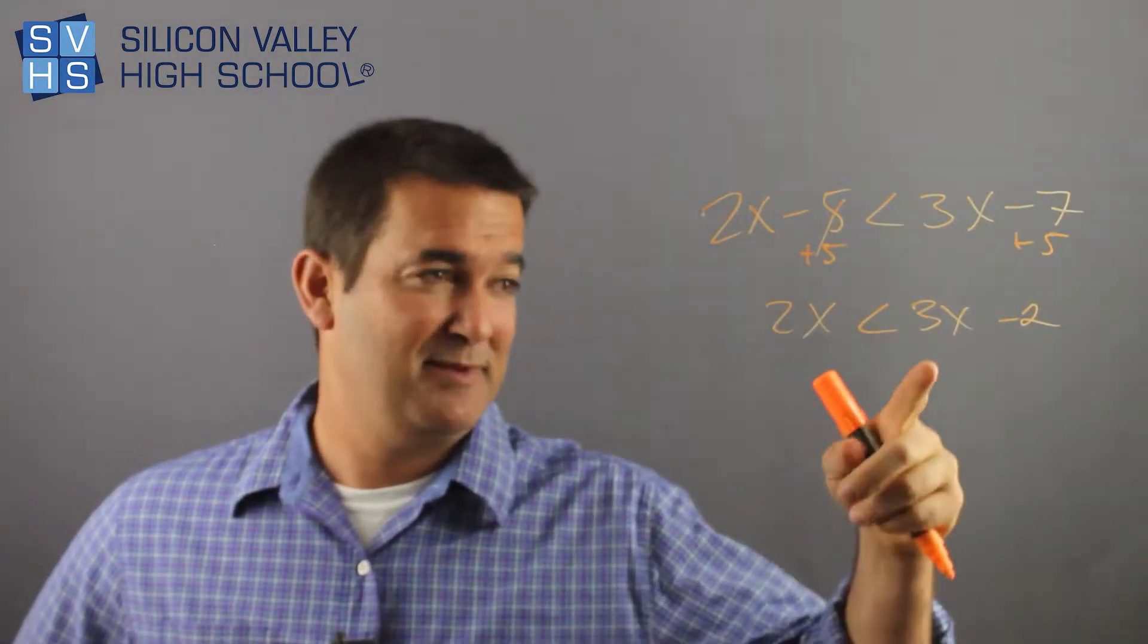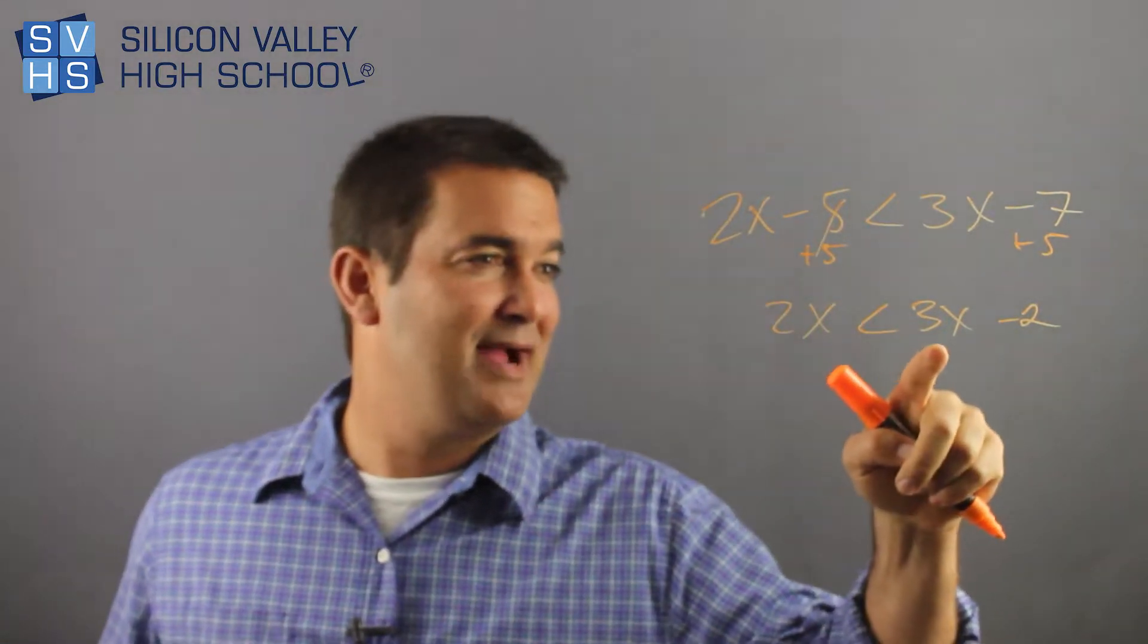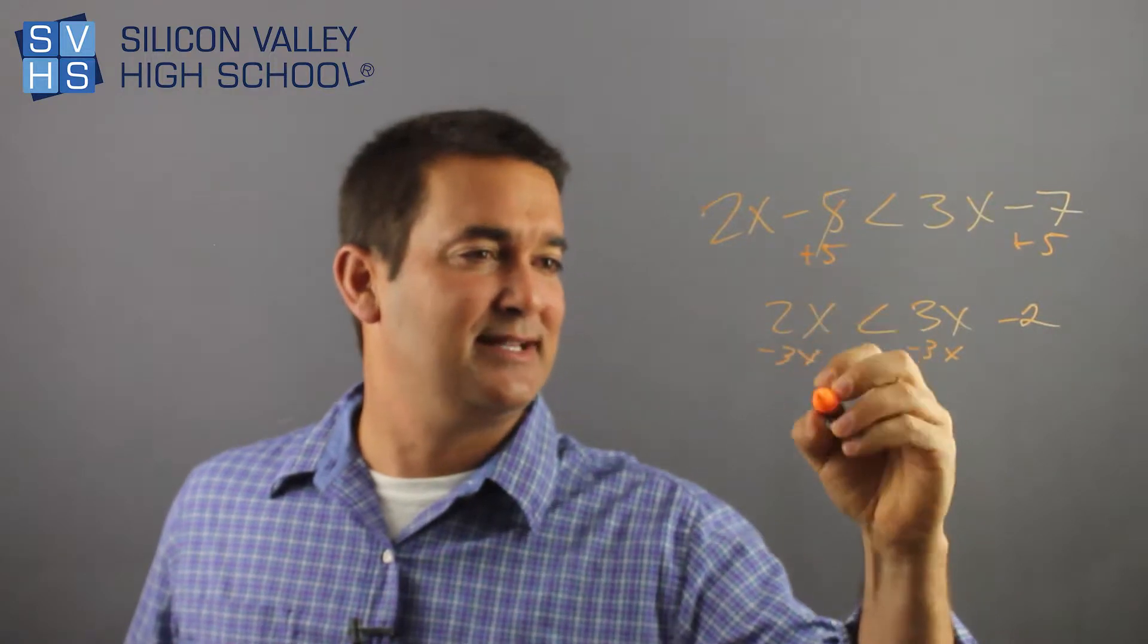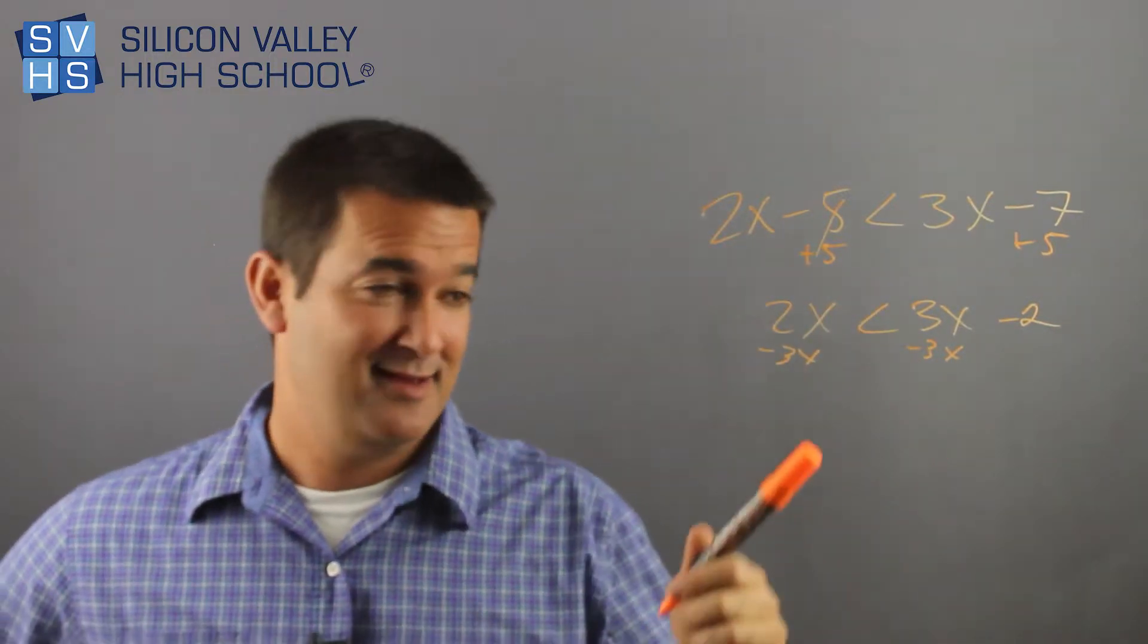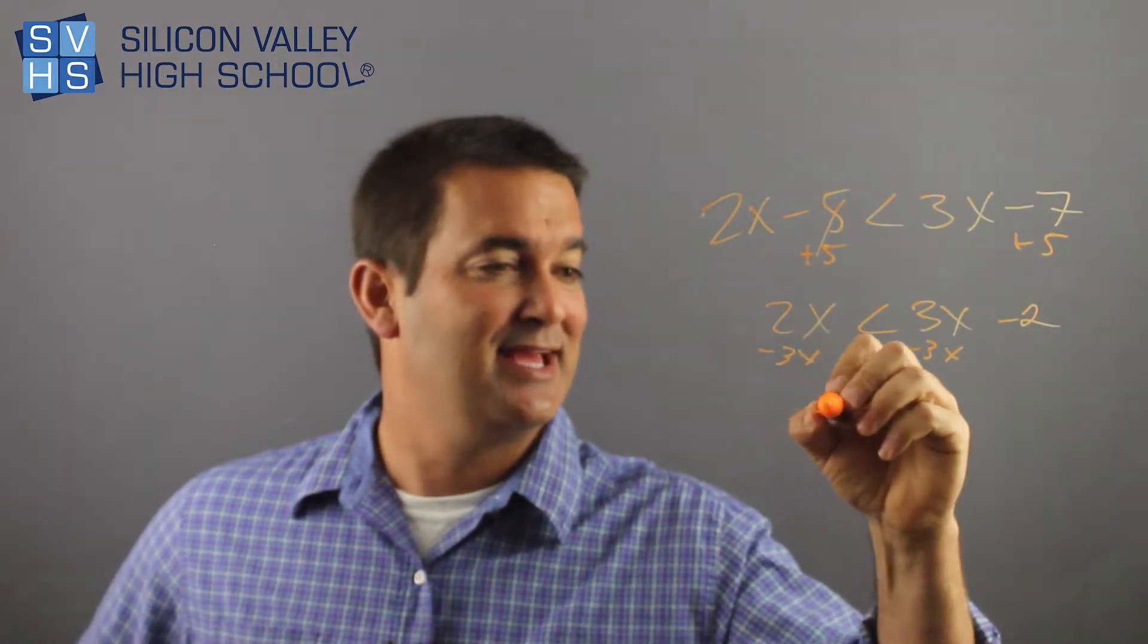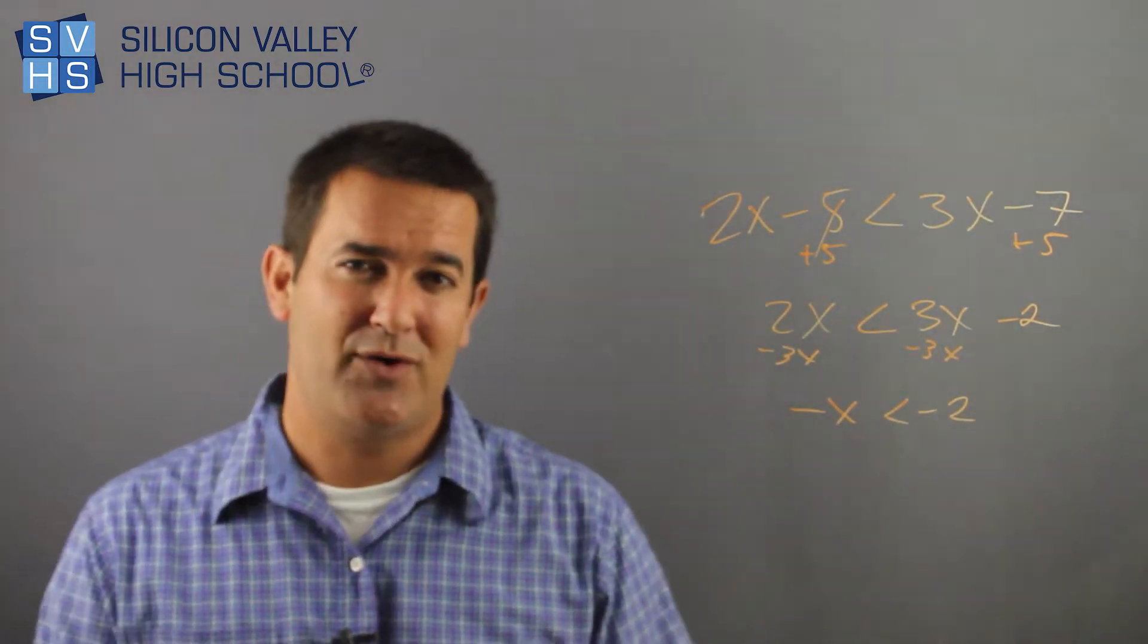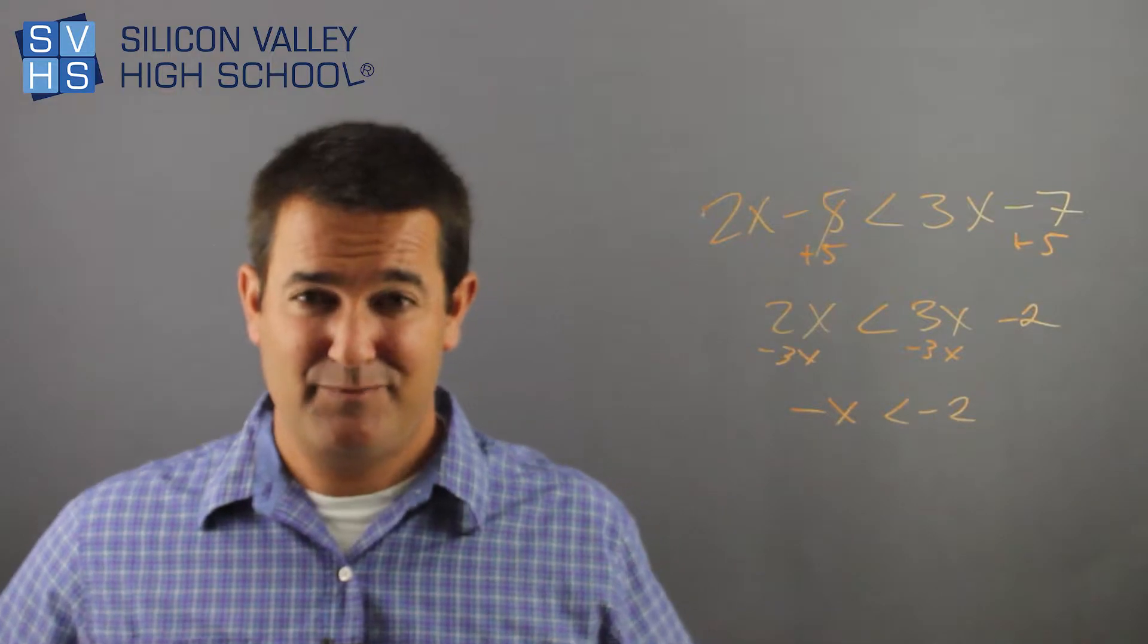Next step would be, because Ryan's all into getting the x's on the left side, I would minus this 3x to the other side. So minus 3x, minus 3x, and then I get, this is heavy, 2x minus 3x is negative x is less than negative 2. This is where you do the whole, I'm going to divide by a negative, and beware.